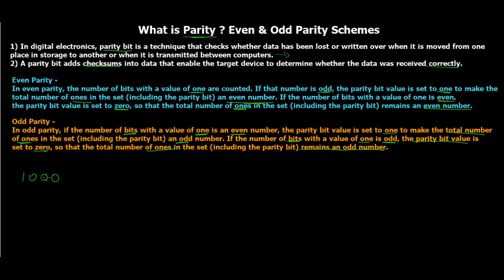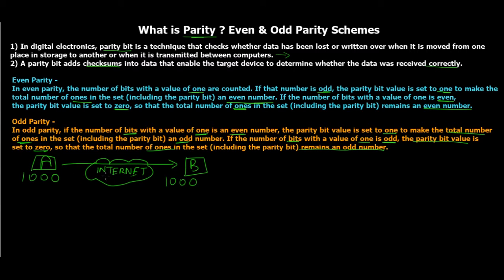Say the data is 1000 — a binary number we have to transfer from location A to location B. In an ideal condition the data should be received exactly as 1000. However, during communication or transmission there can be interference and the data might get corrupted in transit. For example, 1000 could be received as 1001 — the bits might change. This is how data gets corrupted, and this is where even and odd parity schemes are applied to perform error detection.